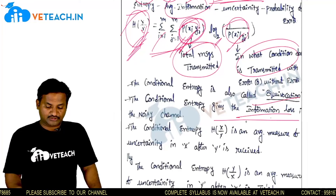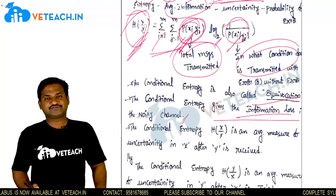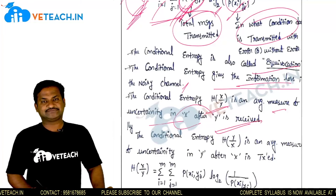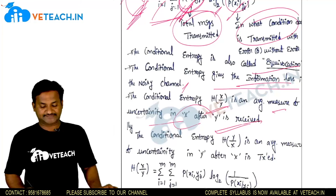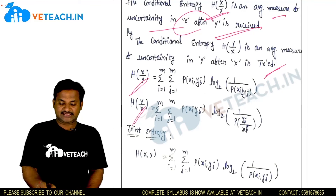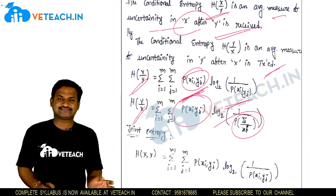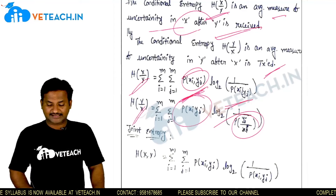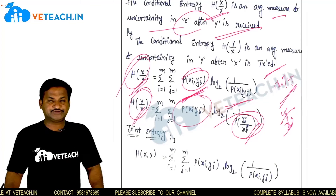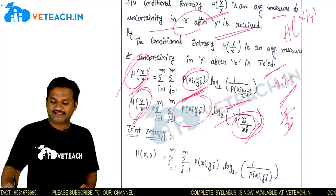The conditional entropy gives the information loss in a noisy channel — how much data can be disturbed or affected by noise. H(x|y) is an average measure of uncertainty in x after y is received, where x is the transmitter and y is the receiver. Note that p(xi, yj) and p(yj, xi) are the same, but p(xi|yj) is different from p(yj|xi), so the representation changes accordingly.